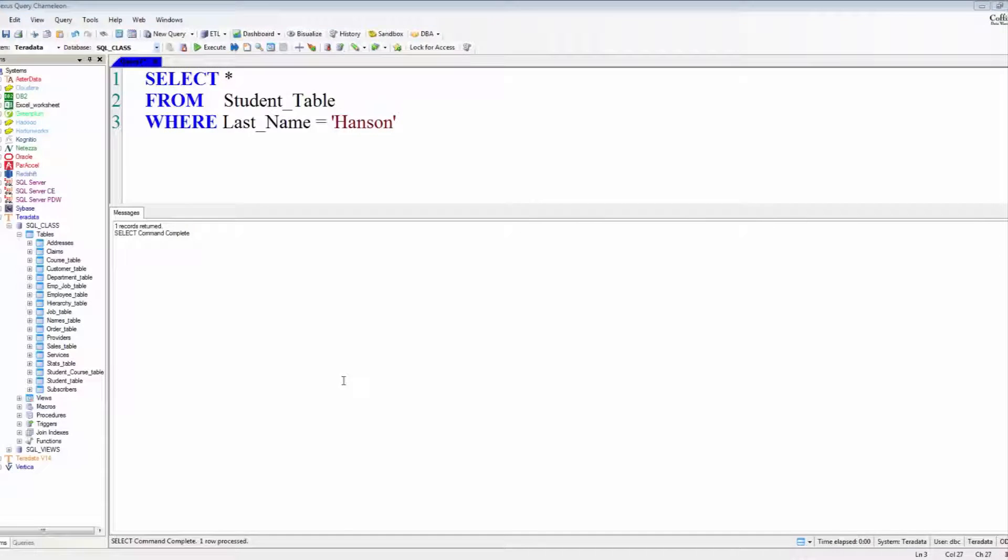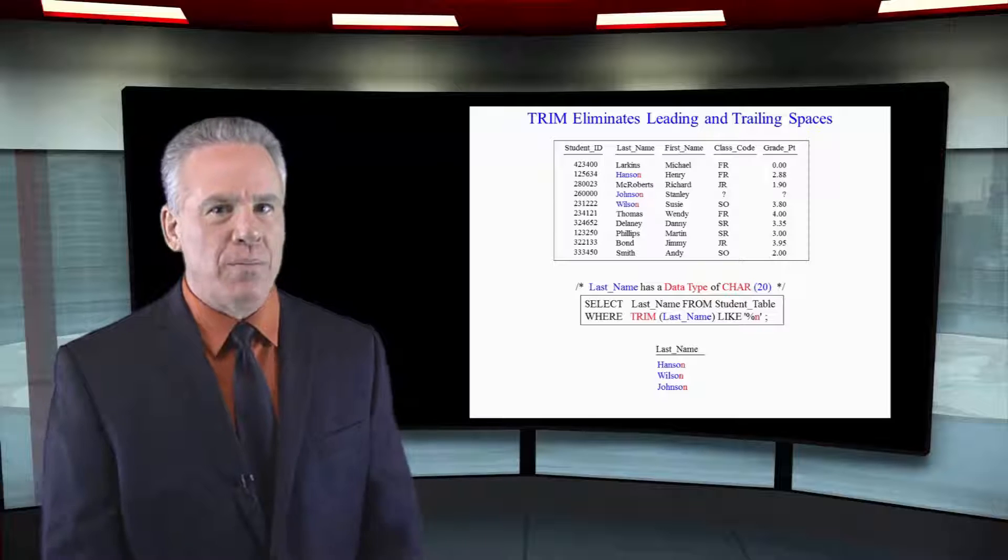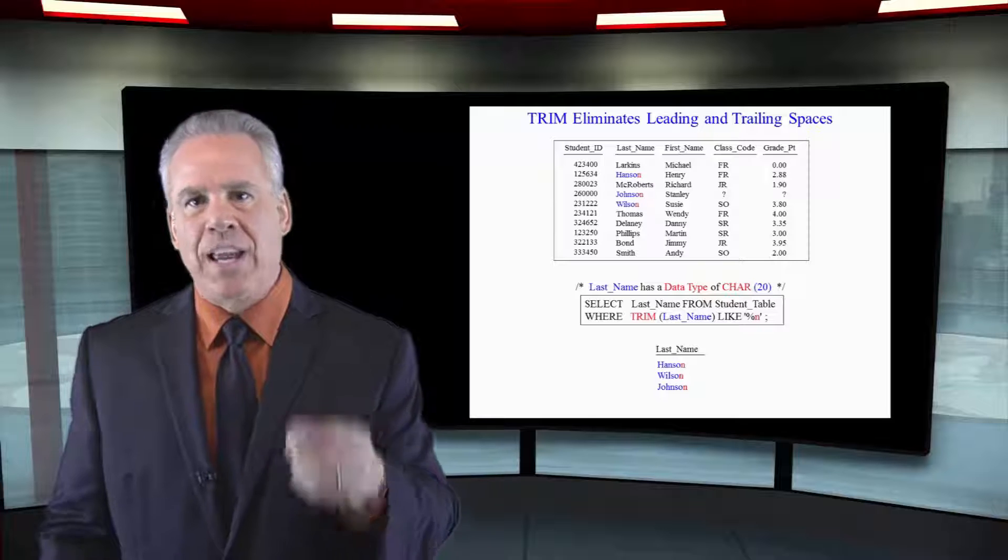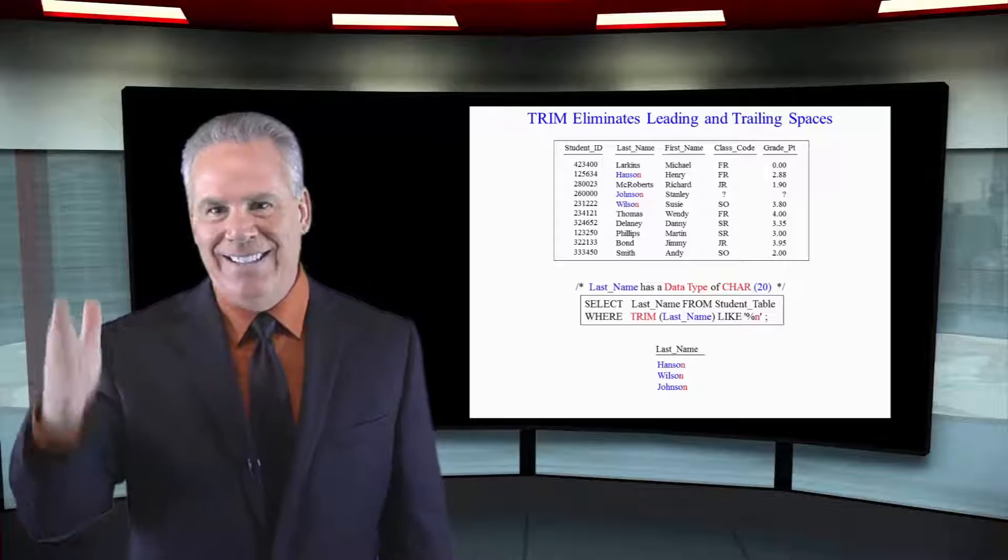But if this would have been said such as where last name equals Hanson, Hanson would come back even though there are spaces at the end. That's never an issue. So you're most likely going to TRIM with certain commands and LIKE is one of those when you're looking for things that end in something.